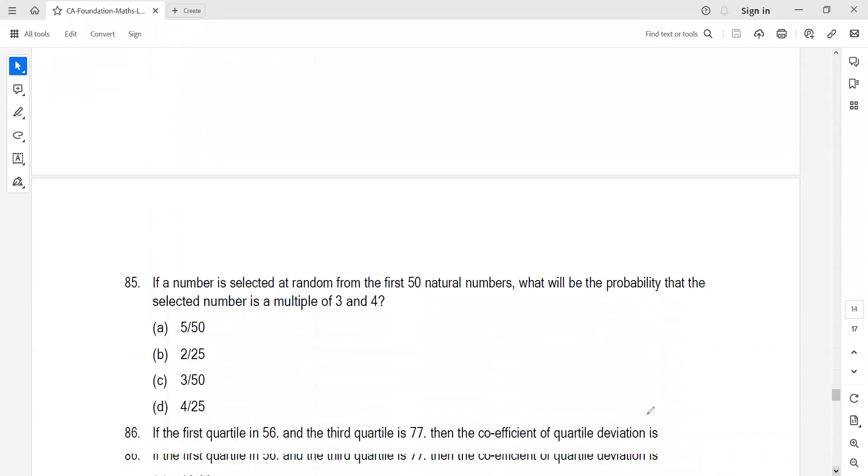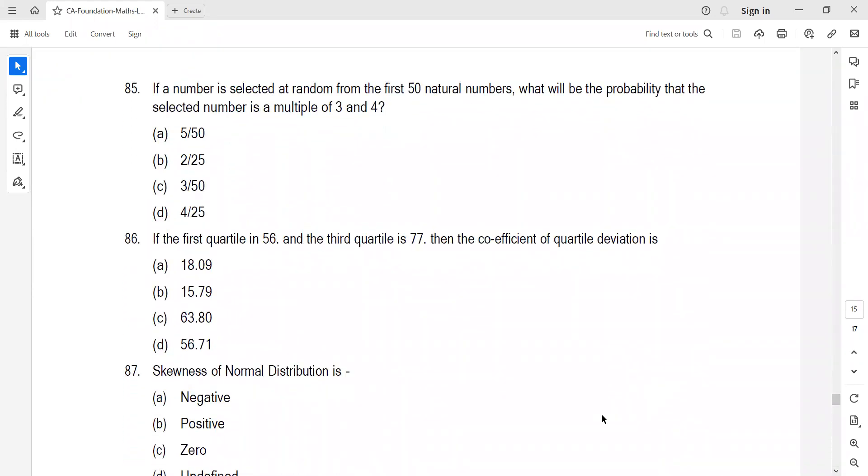If a number is selected at random from 50 natural numbers, probability it's a multiple of 3 and 4. The keyword is 'and', meaning both conditions must be true. So we need multiples of 12: 12, 24, 36, 48. That's 4 favorable outcomes. 4 by 50, which is 2 by 25.